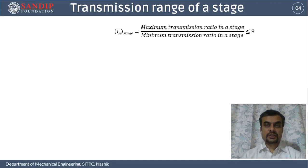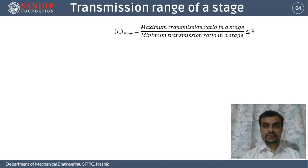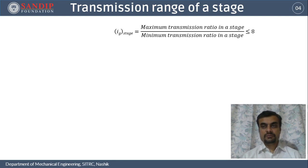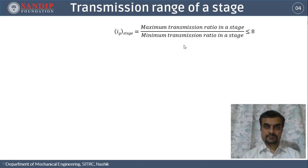Transmission range is calculated for a single stage of a gearbox. It is defined as the ratio of maximum transmission ratio in a stage to the minimum transmission ratio in that stage. For design purposes, this ratio should be less than or equal to 8, so that there are no huge jumps in the speed ranges in one particular stage.